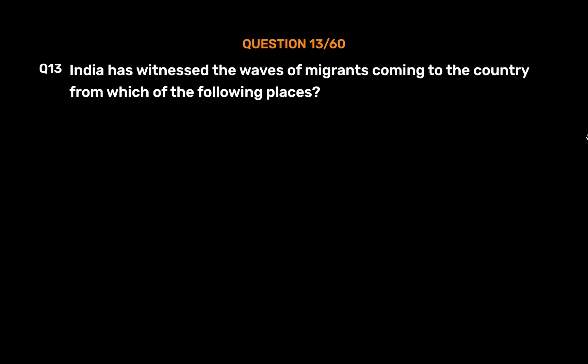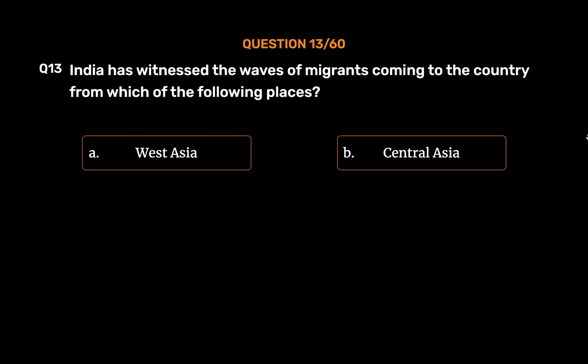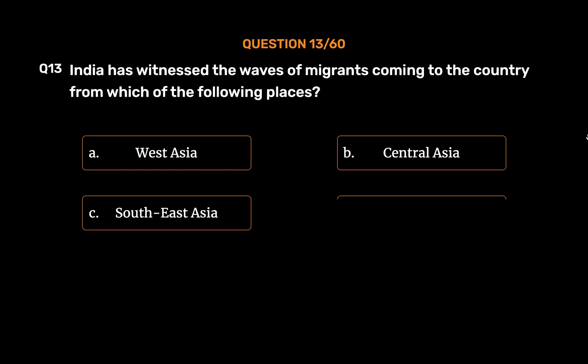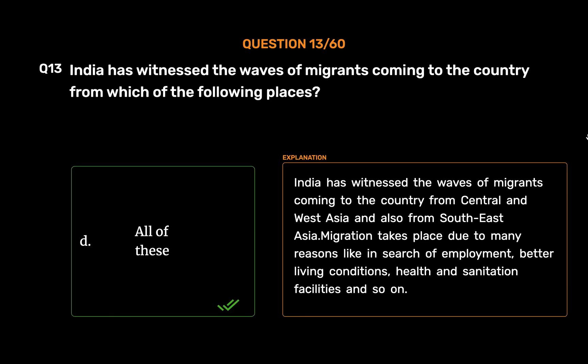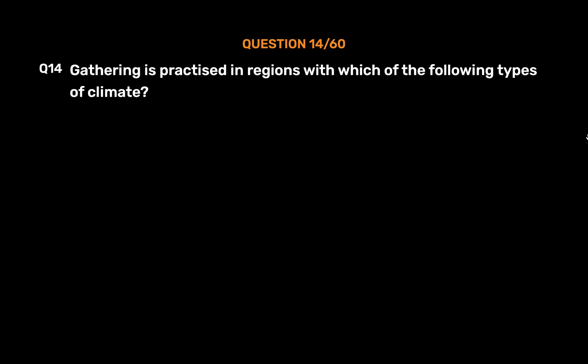Question number 13: India has witnessed waves of migrants coming to the country from which of the following places? Option A: West Asia, option B: Central Asia, option C: Southeast Asia, option D: all of these. The correct answer is option D, all of these. India has witnessed waves of migrants coming from Central and West Asia and also from Southeast Asia. Migration takes place due to many reasons such as search for employment, better living conditions, health and sanitation facilities, and so on.